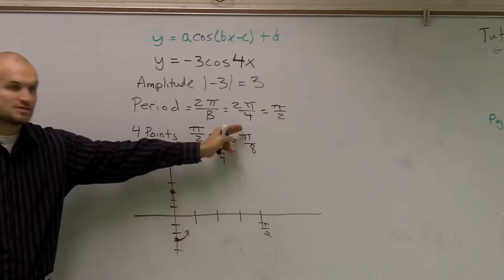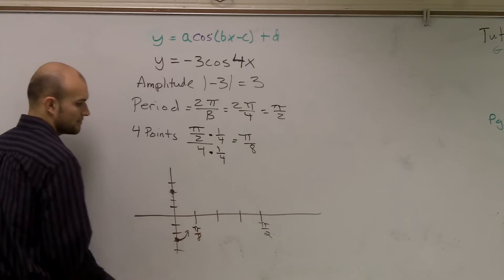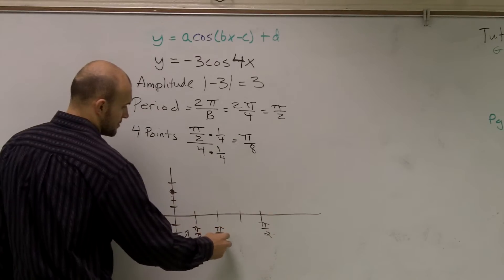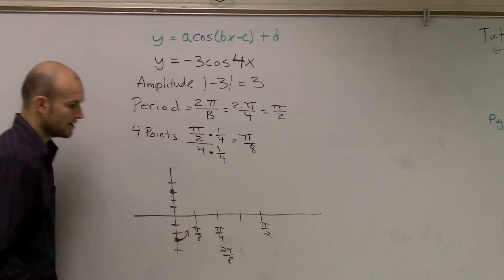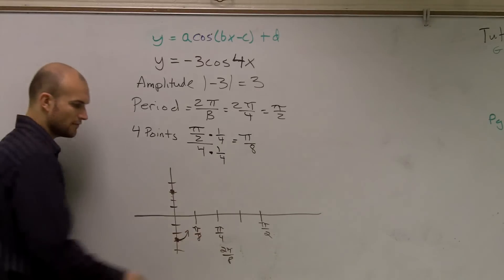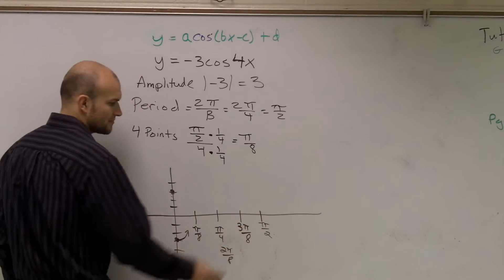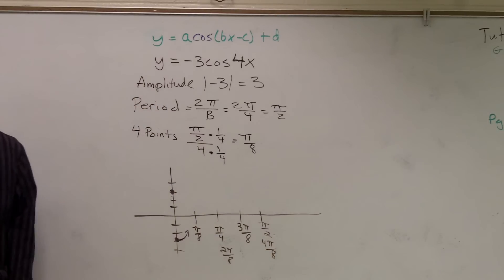Well, remember, each interval is π over 8 between each other. So you could say the first one is π over 8. Next one would be 2π over 8, which would be π over 4. Right? 2π over 8 is the same thing as π over 4. Next one is going to be 3π over 8. And then to add another one would be 4π over 8, which is π over 2.